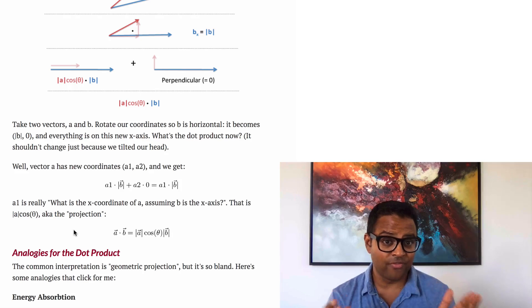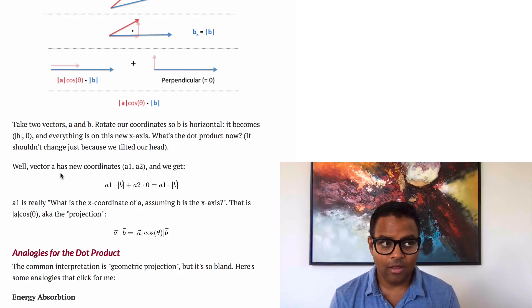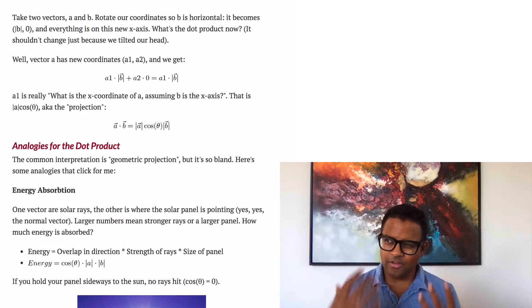If these were normal numbers, 3 and 4 on the number line, it would be 3 times 4 is 12. Great. But if they're moving in different directions, there's no overlap, and so that's not counted. So that's kind of the intuition, but let's see if we can get a better analogy.